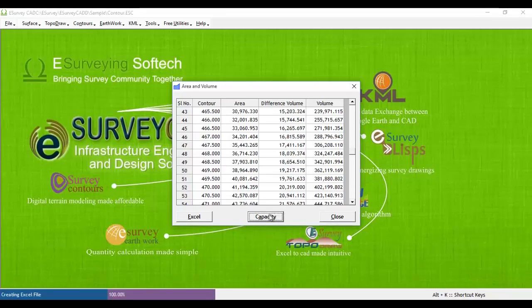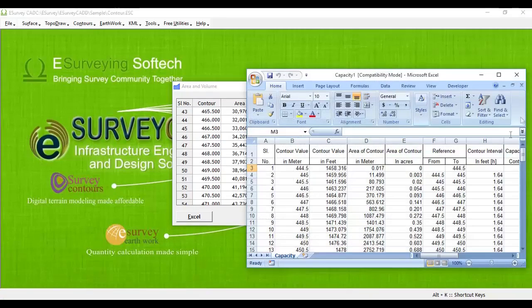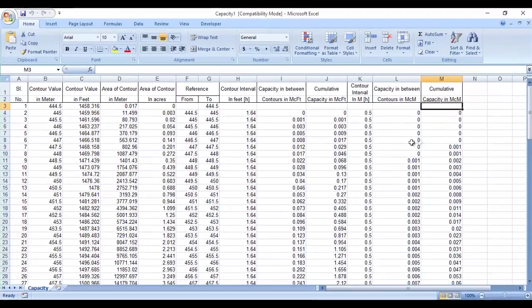To generate a report based on the prismoidal method, click on the capacity button and the software will generate a spreadsheet with calculation of volume using the prismoidal method.